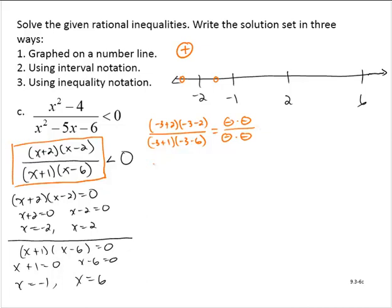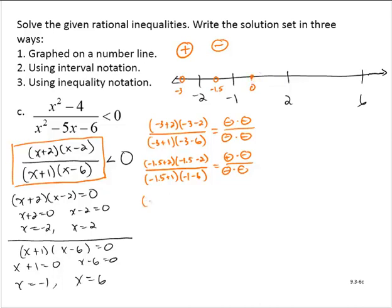Testing between negative 2 and negative 1, how about negative 1.5? That gives a positive times a negative over a negative times a negative — three negatives total — giving a negative result for that interval. Testing between negative 1 and 2, how about x equals 0? 0 plus 2 is positive, 0 minus 2 is negative, 0 plus 1 is positive, 0 minus 6 is negative — two negatives — giving a positive result.